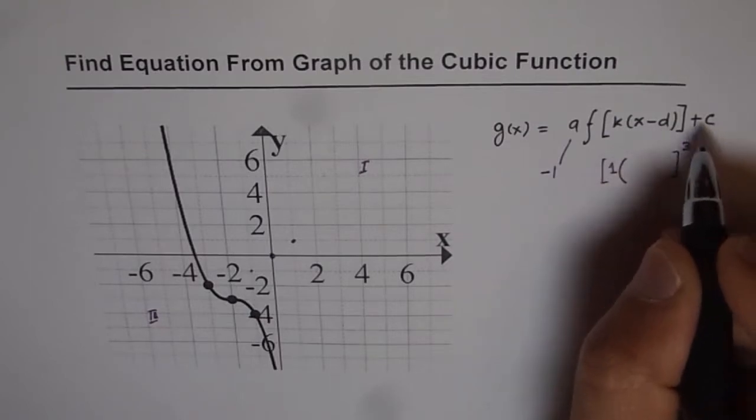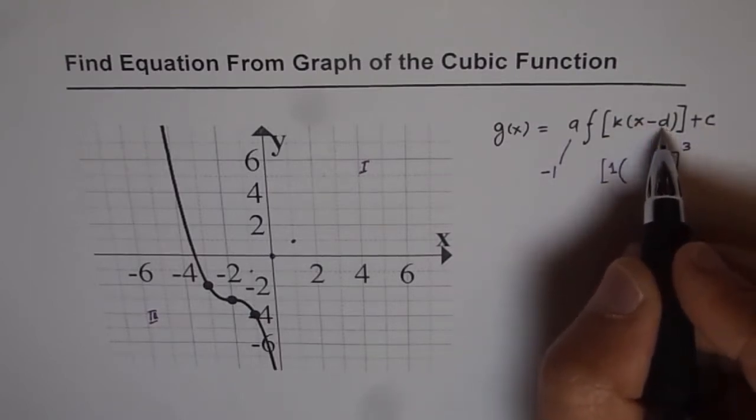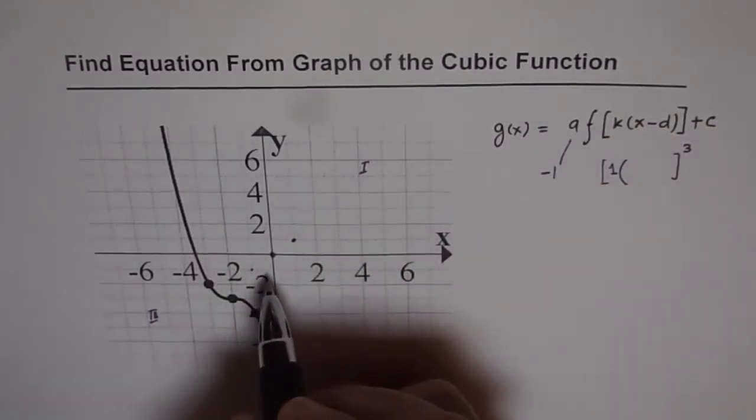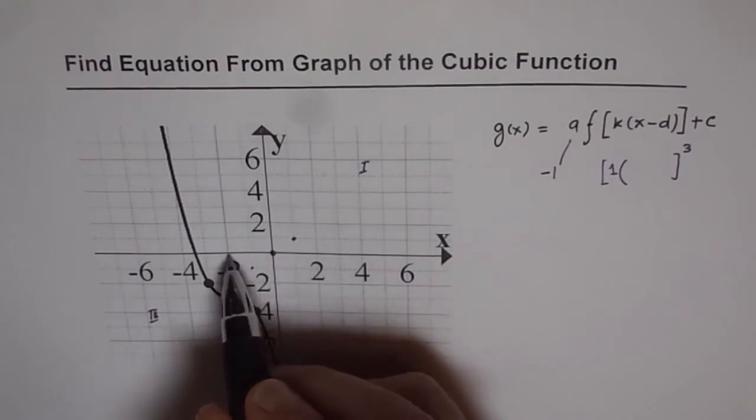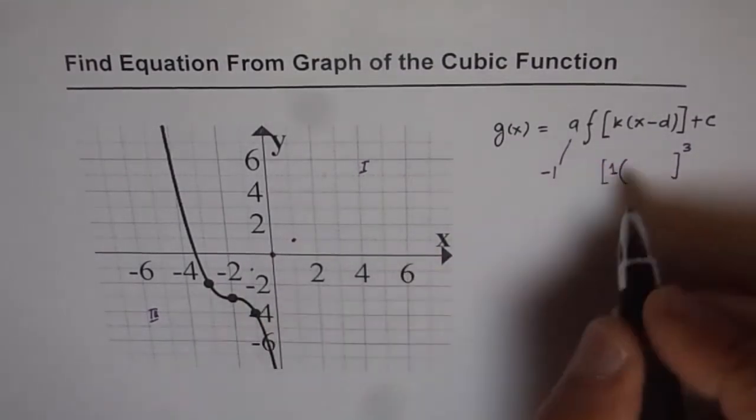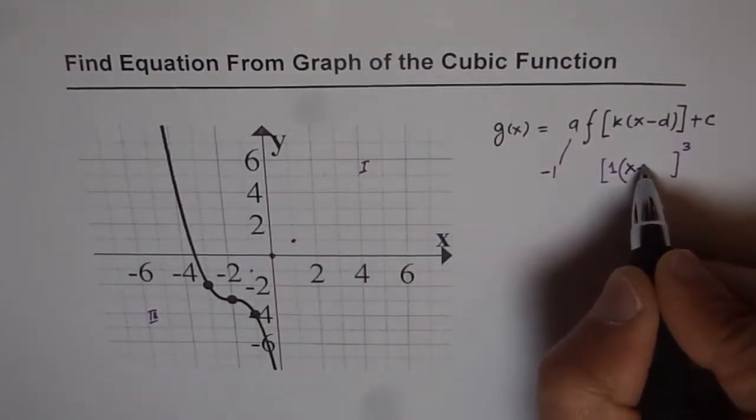About d and c, d is horizontal translation. So if you see, this function has been horizontally translated and it has moved one, two units to the left. So it is plus 2 here.